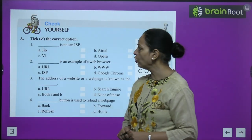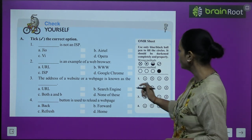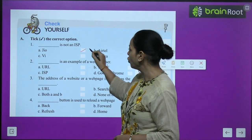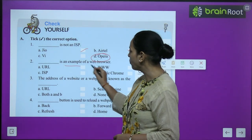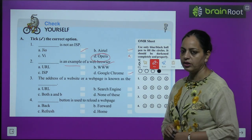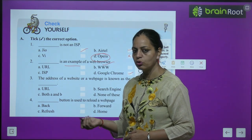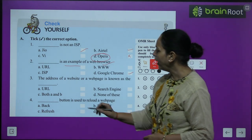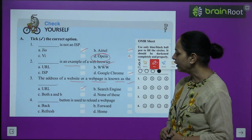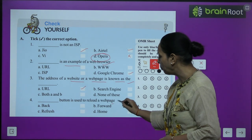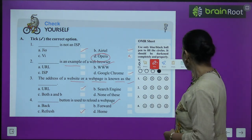Now let's do the exercise. Section A — tick the correct option. First question: which of the following is not an ISP? Options include Jio, Airtel, and Opera. Opera is a browser, so the answer is D (Opera). Second question: which is an example of a web browser? Answer is Google Chrome (D). Third question: the address of a website or web page is known as the URL. Fourth question: which button is used to reload a web page? Answer is the Refresh button.